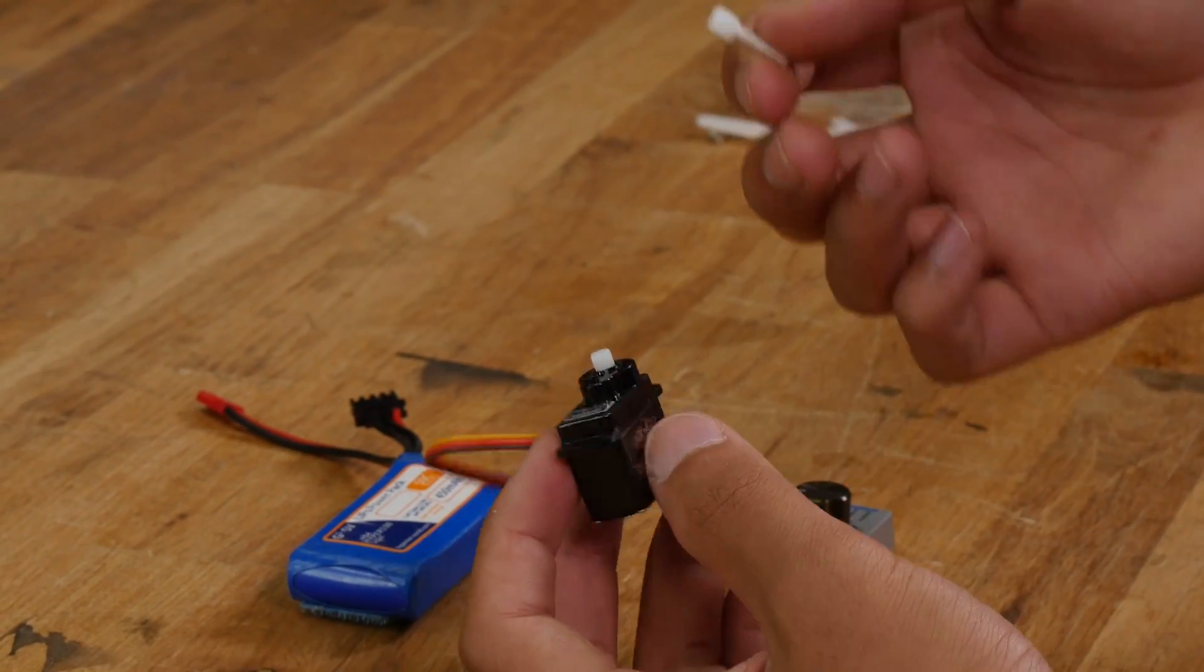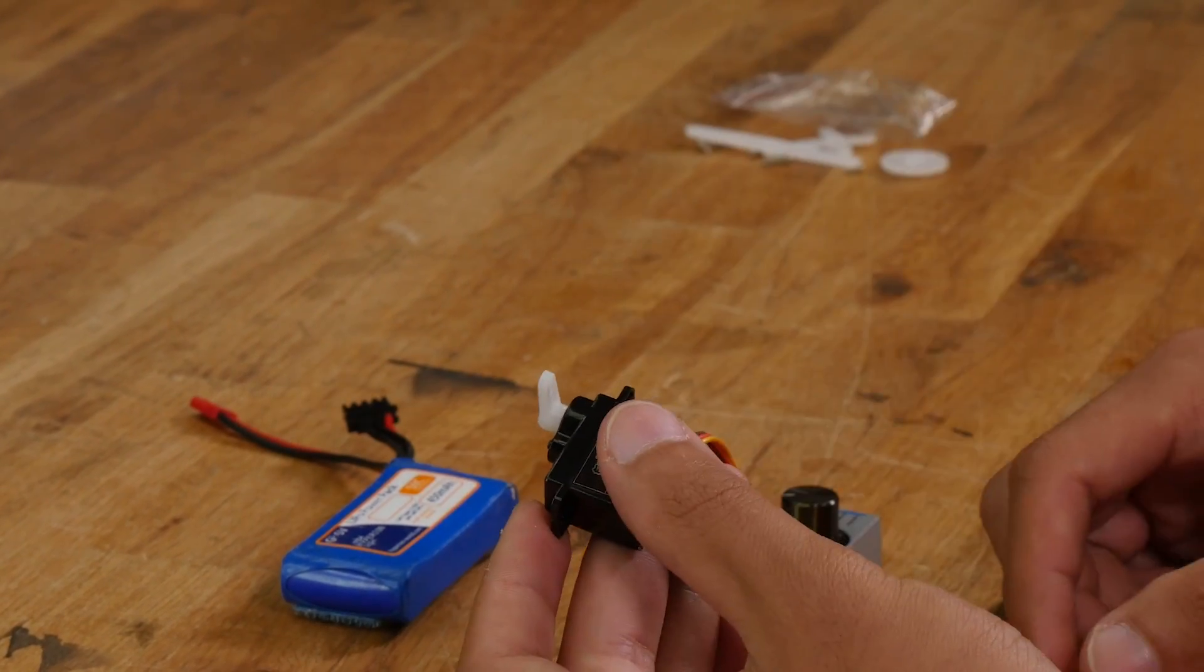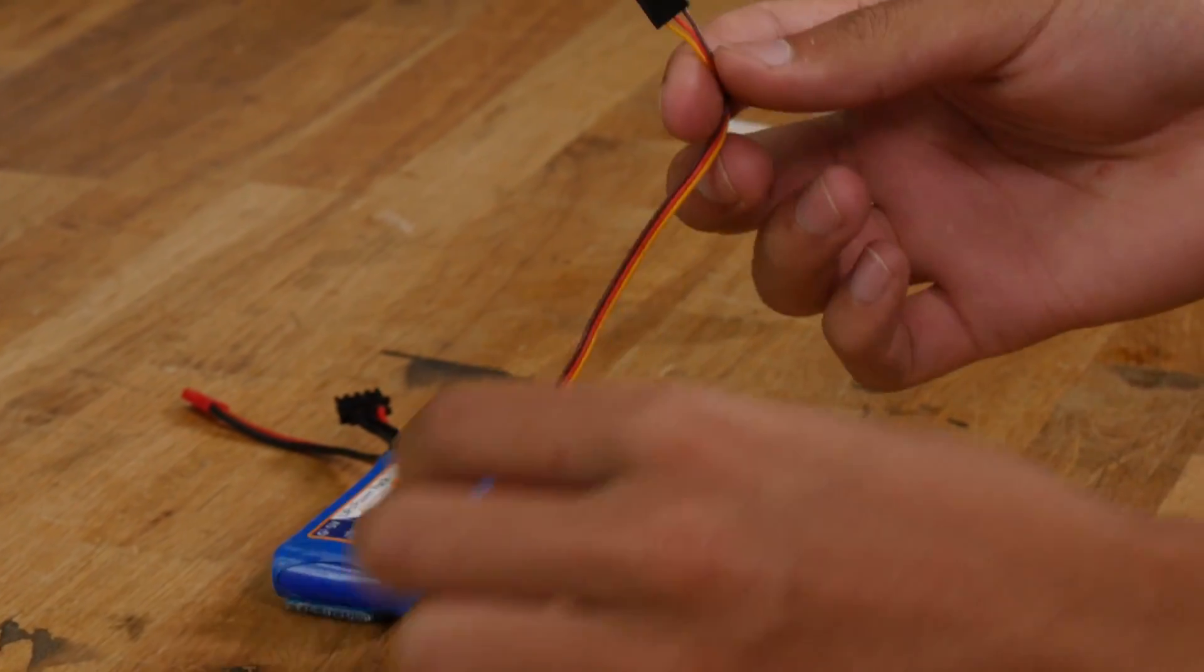First, you want to put your servo arm on as close to 90 degrees as possible. We might be adjusting that later. Then let's go ahead and plug in our servo.